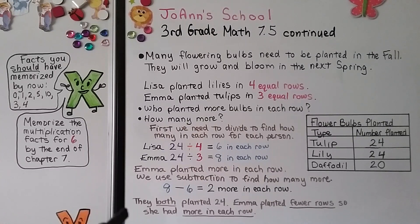They both planted 24, but Emma planted fewer rows, so she had more in each row. She had to split up her 24 into less rows, so she had to put more in each row.